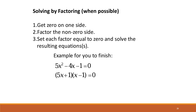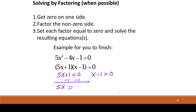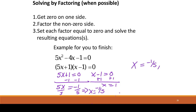Here they've already set up the quadratic equal to 0 and factored for us. We set each factor equal to 0 and solve. On the first factor, subtract 1 from both sides to get 5x = −1, then divide by 5 to get x = −1/5. On the second factor, add 1 to both sides to get x = 1. So x equals negative one-fifth or 1.